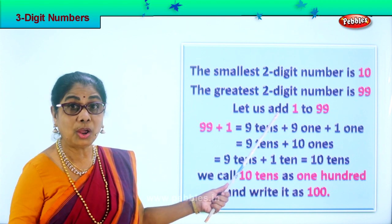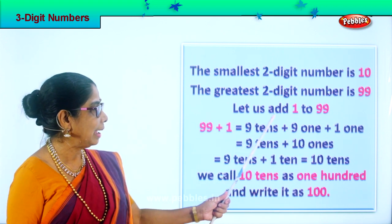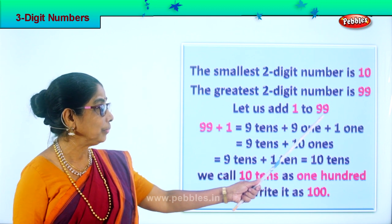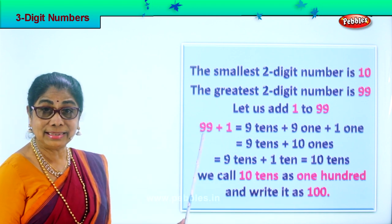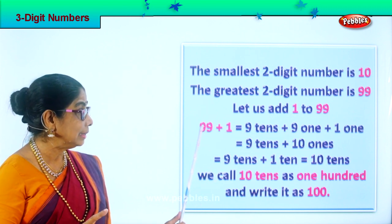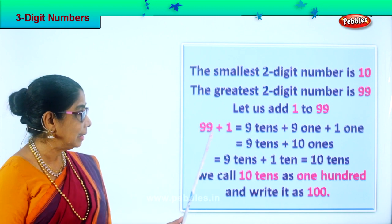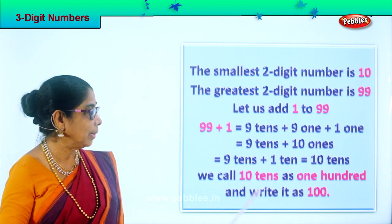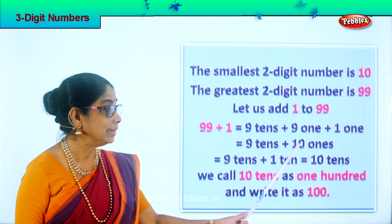Let us add one to ninety-nine. What will we get? Ninety-nine plus one — what is that? One hundred. Ninety-nine plus one more is equal to nine tens, nine ones, and one one.